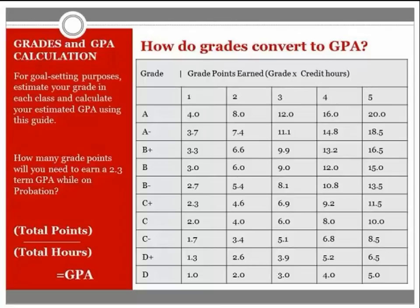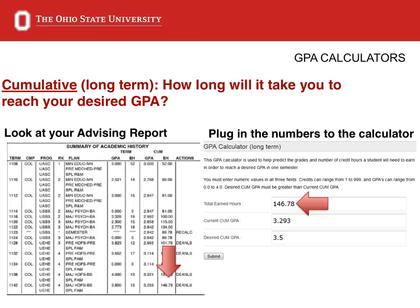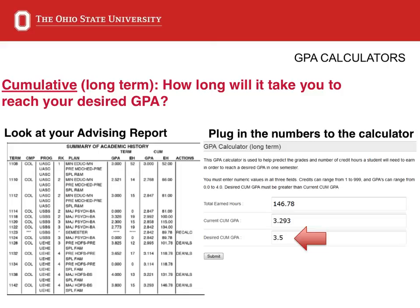So how is GPA calculated? This chart shows you how grades convert to GPA and the formula used to calculate GPA. A helpful tool you should keep in mind is a GPA calculator, which you can find on the College of Education and Human Ecology site. To use the GPA calculator, you will need to refer to your advising report. You will enter your total earned hours at OSU, your current GPA, and your desired GPA. The calculator will then generate a pop-up box that tells you how many credit hours you will need to complete at a certain GPA to effectively raise your cumulative GPA to your desired goal.